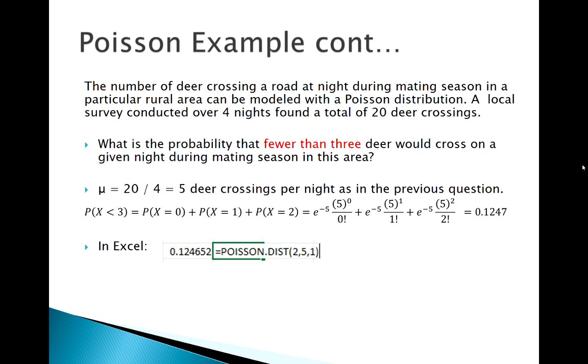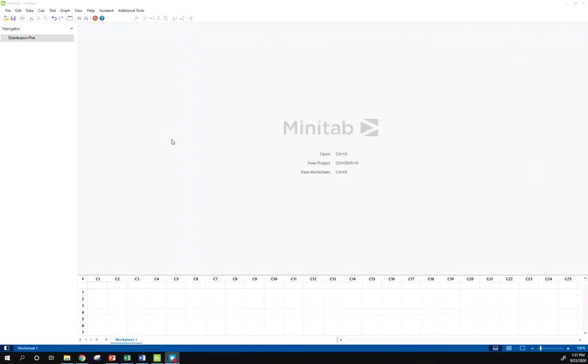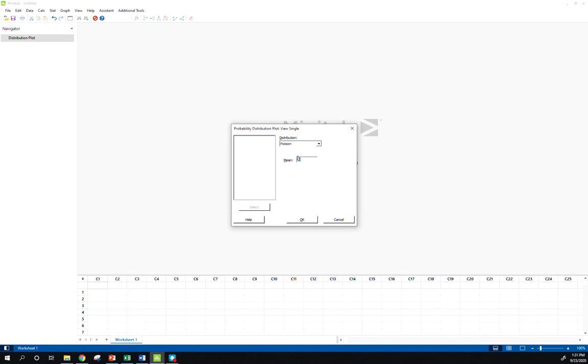Excel agrees with what we got. Now when we have cumulative probabilities, these are also more visual things. Lots of times with cumulative probabilities it's nice to be able to visualize that, so let's try that in Minitab. In Minitab, if I go to graph, probability distribution plot, click OK.